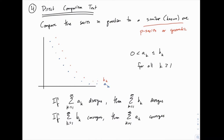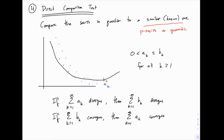If the order was swapped, we could just relabel them, but if they ever cross, then this approach won't work. The idea is that if the upper one converges, it forces the lower one to converge as well — kind of squeezing it down. On the other hand, if the lower one diverges, the upper one is forced to diverge as well because it's above that divergent one. That's what the direct comparison test says. It's fairly limited: if the upper series diverges, that tells us nothing about the lower series, and if the lower series converges, that tells us nothing about the upper series.